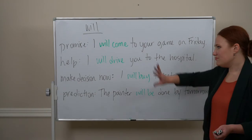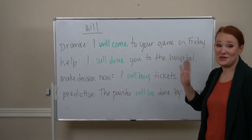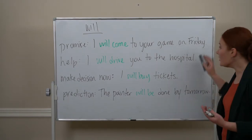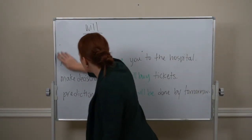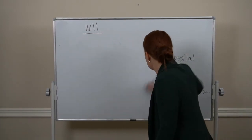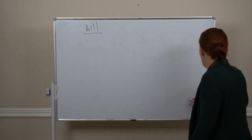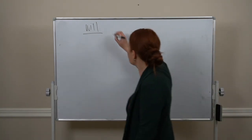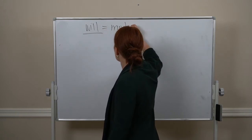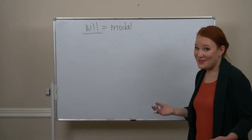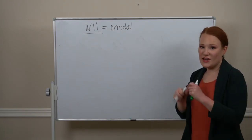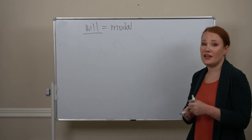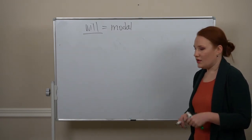So those are four different uses for 'will' for the future. Now let's talk about the form of 'will' and sentence structure. 'Will' is a modal verb, which means a few things: no -s conjugations, and it's followed by the base form of the main verb.